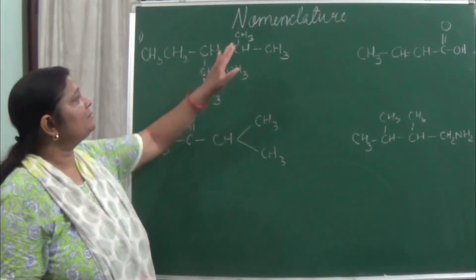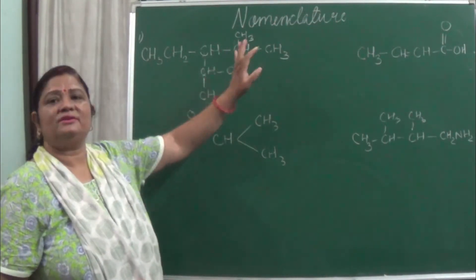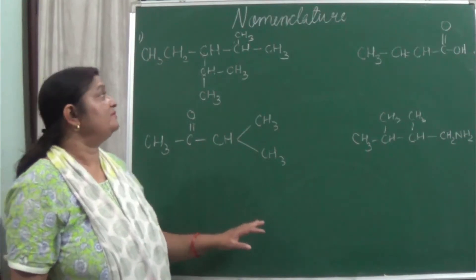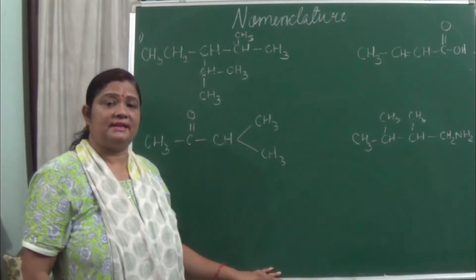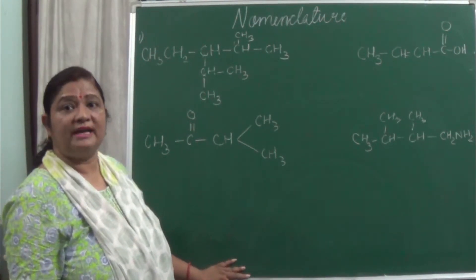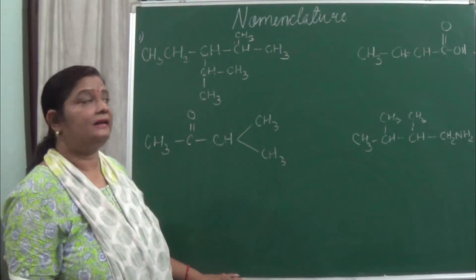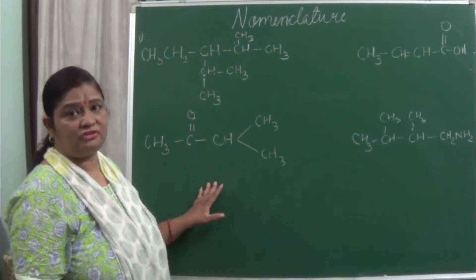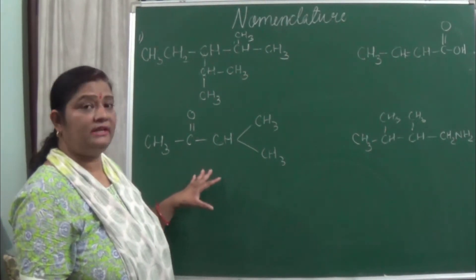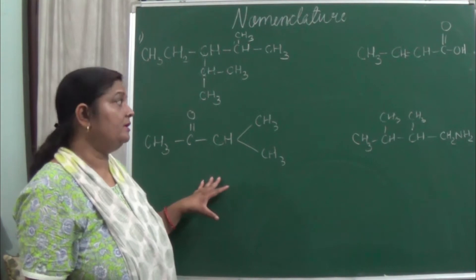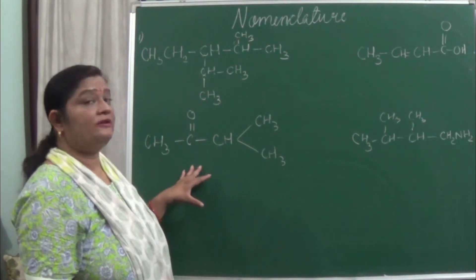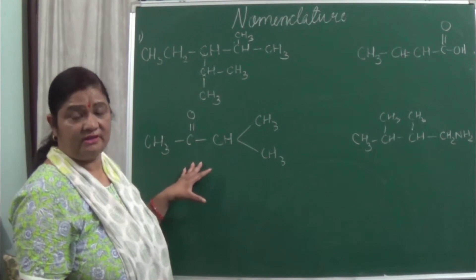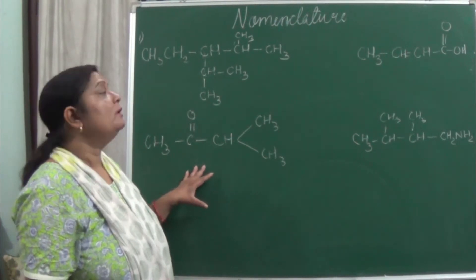Hello students, today we are going to study nomenclature of organic compounds. The IUPAC system you have studied in class 10th — the branching of alkanes, alkenes, and alkynes — but you have not studied more about functional groups and complex chains. You have to study those also in class 11.